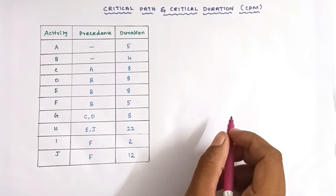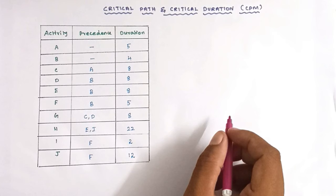Hello friends, today we're going to see how to calculate the critical path and critical duration. First we have to know what is meant by critical path and critical duration. In a network path of any project, the longest duration is called critical duration, and the corresponding path having the longest duration is called the critical path.